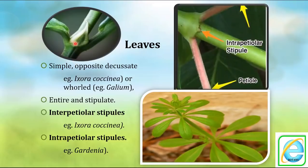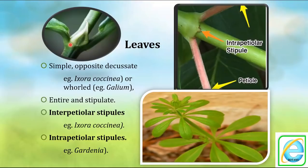Interpetiolar stipules are small leaf-like structures arising in between the two petioles of opposite leaves. These two stipules get fused together around the two opposite leaves — such arrangement is called interpetiolar stipule. Intrapetiolar means the small outgrowth or leaf-like structure present on the two petioles or on the stem between the two petioles — called intrapetiolar stipule.